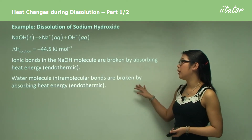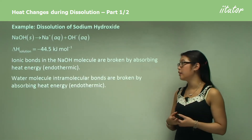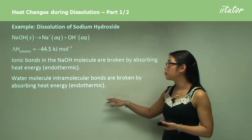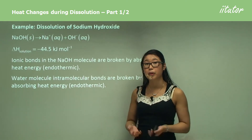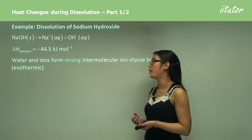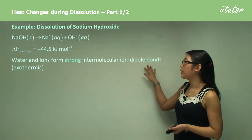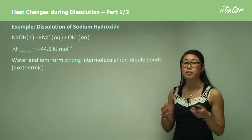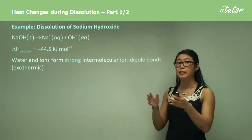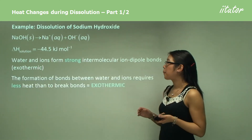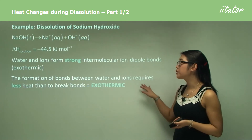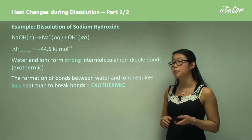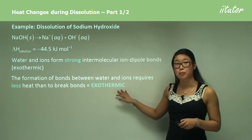Water molecules that interact together — those intermolecular bonds are broken by absorbing heat energy, which is endothermic. Then water and ions form strong intermolecular ion-dipole bonds, and this is exothermic because bonds are forming and releasing energy. The energy released from forming bonds between water and ions is greater than the energy required to break bonds, so overall it's exothermic.